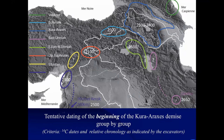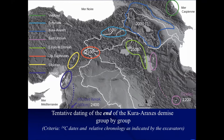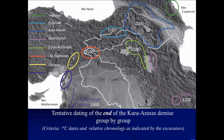If we now look at the end of the Kura-Araxes demise group by group, focusing on radiocarbon dates and relative chronology as indicated by the excavators, we see a very different picture. In some cases, such as in the Eastern Van–Western Urmia region, it seems that the demise was fairly short, extending over a very short period of time. At Godin Tepe in the Kangava region it extended about 300 years. Whereas in the Erzurum region — this is the most striking example — the demise lasted almost 1,000 years, with Kura-Araxes properties still attested in Middle Bronze Age 2 occupational levels at Sosuyuk, for instance.